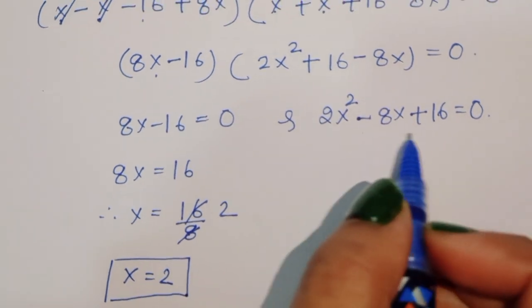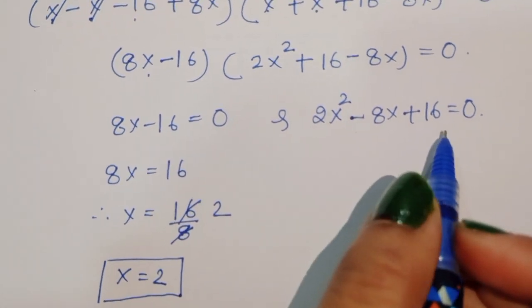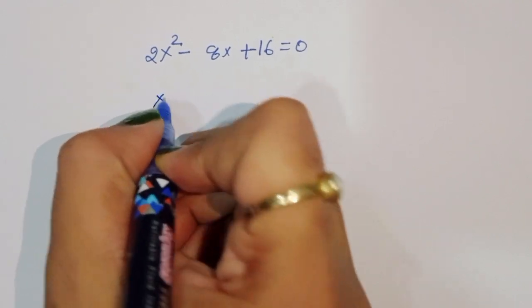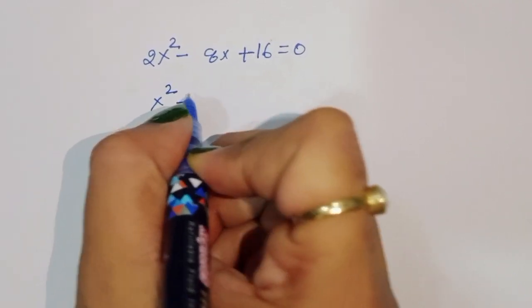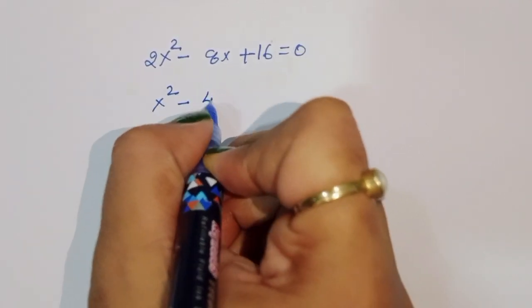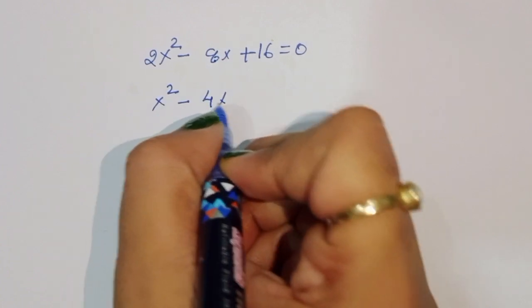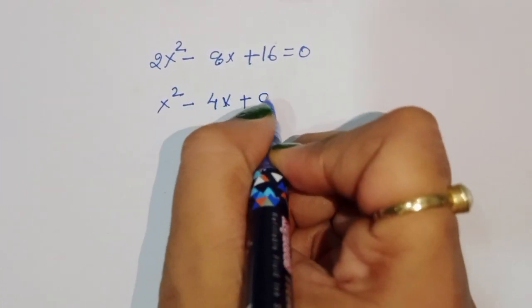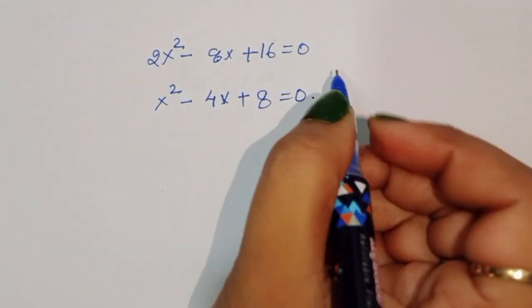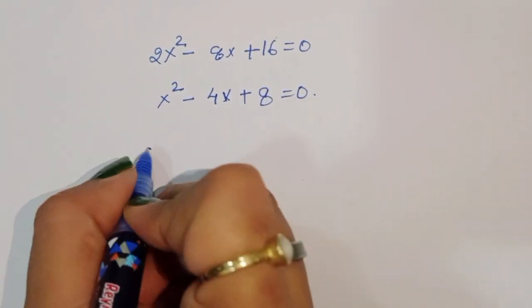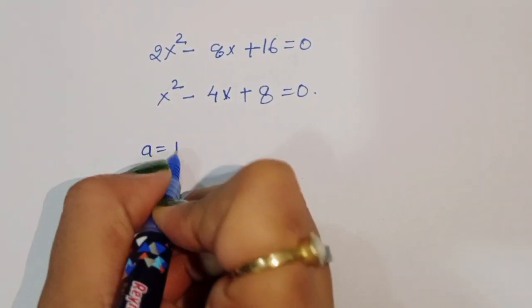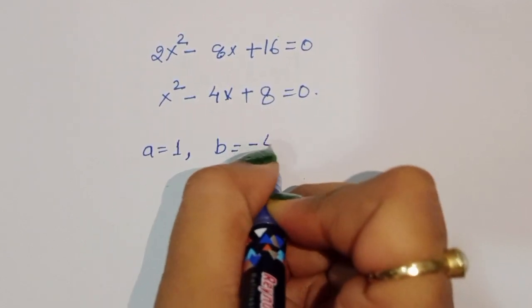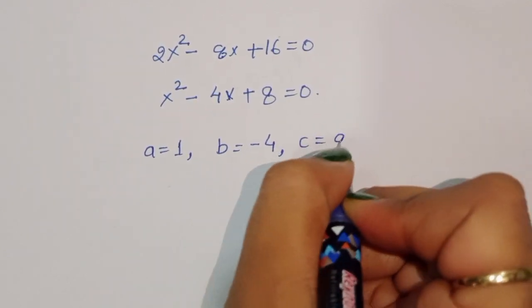For the second equation, 2x square minus 8x plus 16 equals 0. Dividing by 2, we get x square minus 4x plus 8 equals 0. The coefficients are: a equals 1, b equals minus 4, and c equals 8.